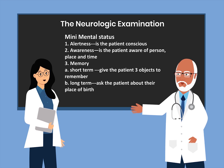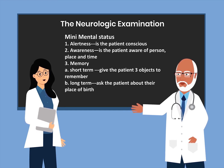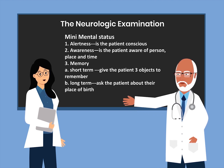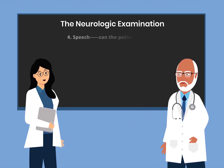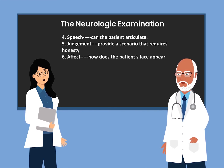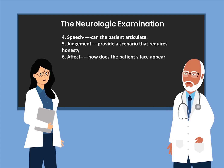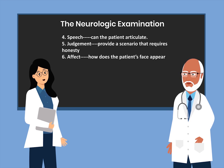Memory is the next component, and we should check for both short-term memory and long-term memory. For short-term memory, we can give the patient three objects to remember. For long-term memory, we can ask them about their place of birth. We can also evaluate the person's speech — can they articulate? Judgment can be evaluated by providing a scenario that would evaluate the person's honesty. And then affect is to establish how the patient's face appears.